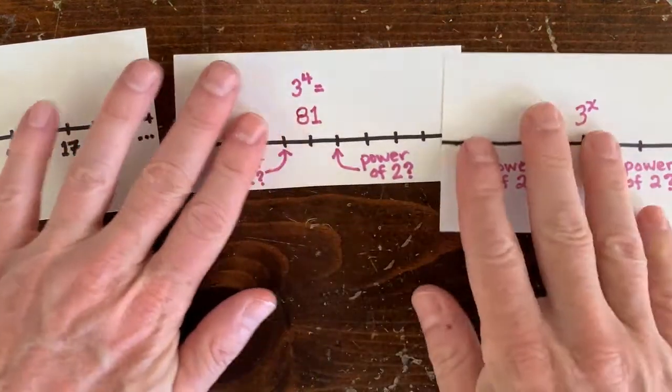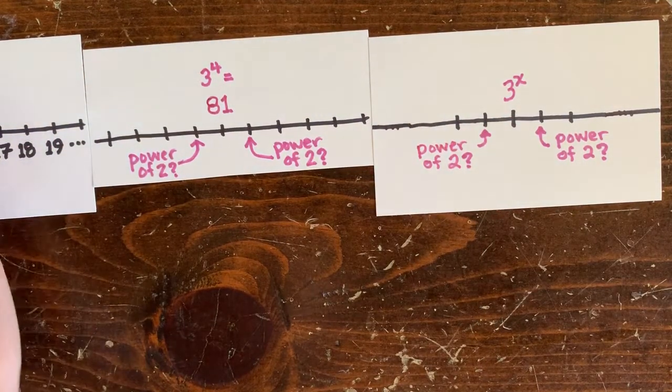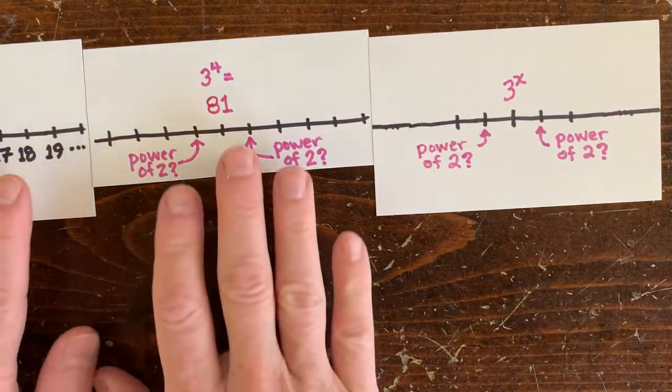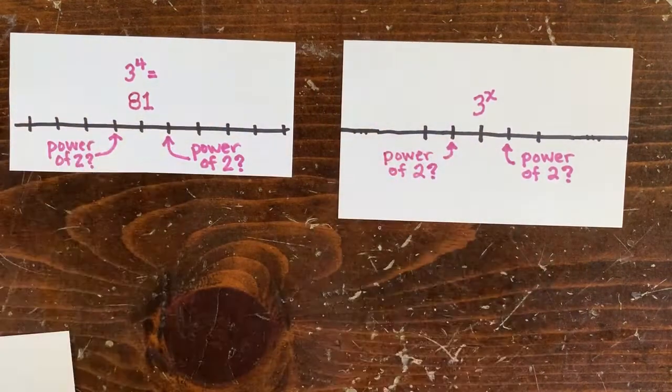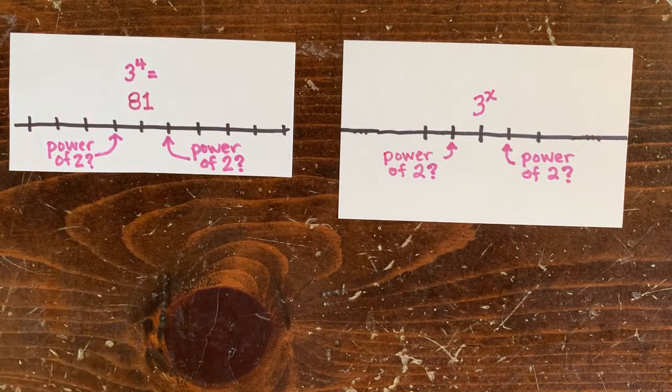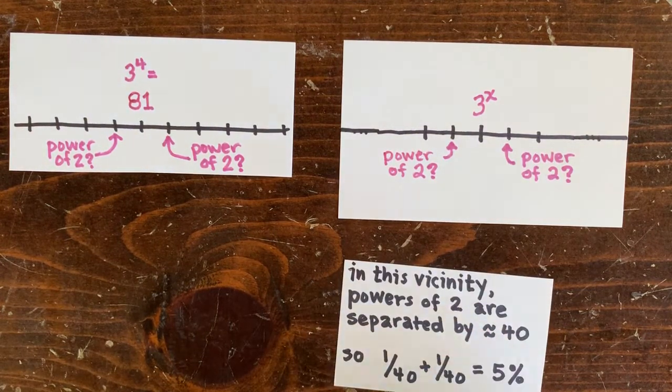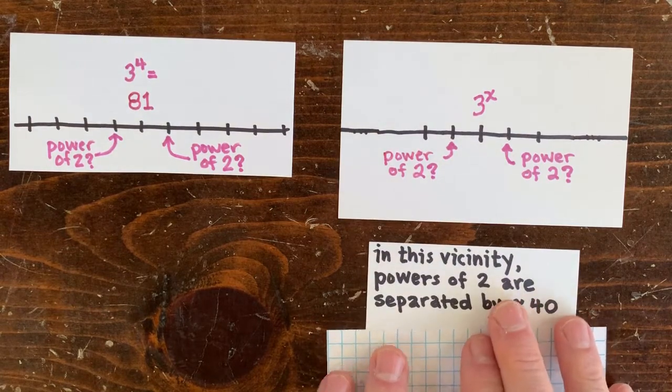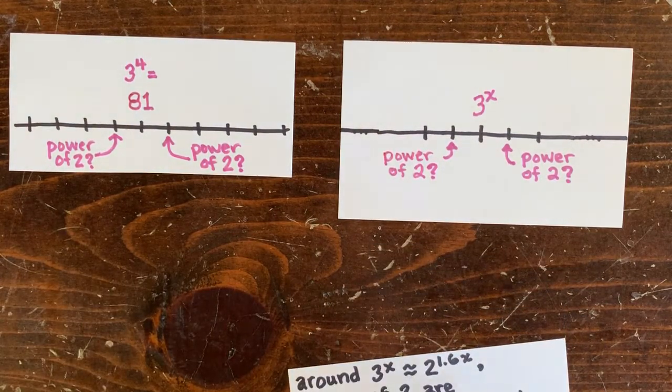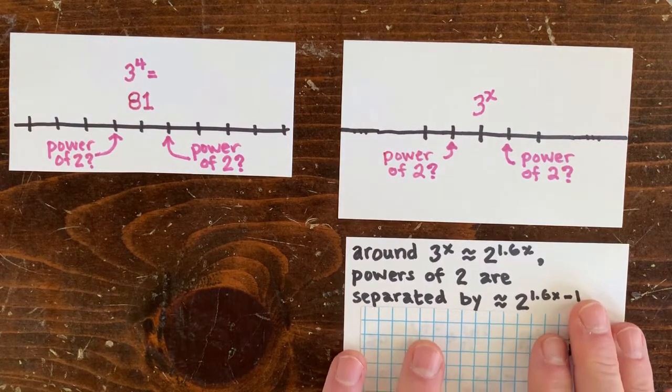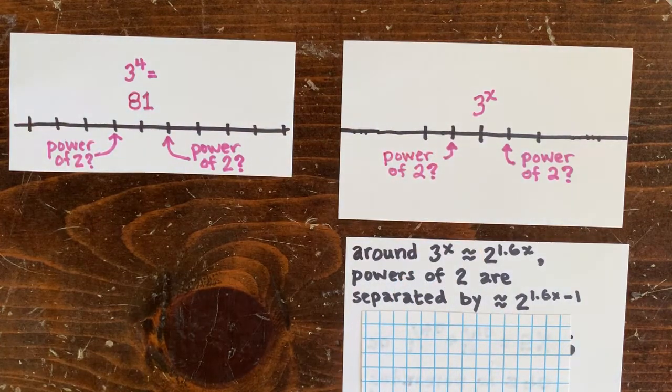Say we've got some big 3 to the x. What's the chance that 3 to the x minus 1 or 3 to the x plus 1 is a power of 2? Well, 3 to the x is roughly 2 to the 1.6x, and at that magnitude, the distance between powers of 2 is about 2 to the 1.6x minus 2 to the 1 minus that. So what's the chance a random number like 3 to the x minus 1 is a power of 2? Well, it's 1 over that.